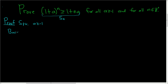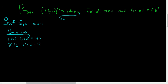Let's start with the base case. We're proving it's true for all positive integers, so we have to start with the smallest one, which is n equals 1. On the left-hand side, if we replace n with 1, we get (1 + a)^1, which is simply 1 + a. On the right-hand side we get 1 + 1·a, which is simply 1 + a. So 1 + a is certainly greater than or equal to 1 + a — in particular it's equal — so our statement is true for n equals 1. S sub 1 is true, and the base case is taken care of.